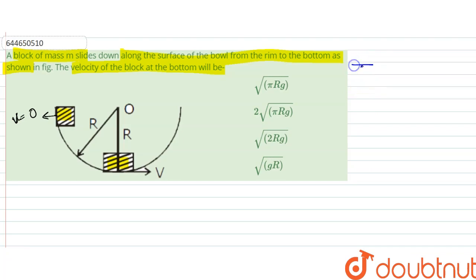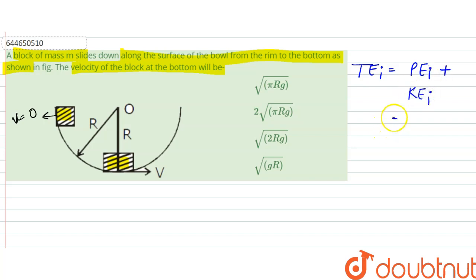This total energy initially would be equal to potential energy initially plus kinetic energy initially. That would be equal to potential energy, since this is at height h with respect to this position. That would be mg r, the height is r, plus half mv square.